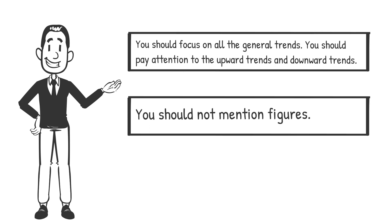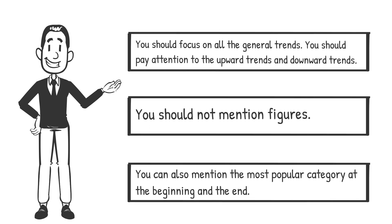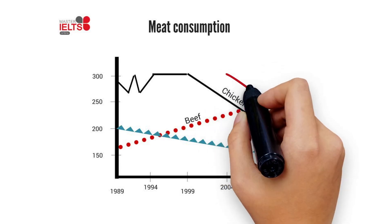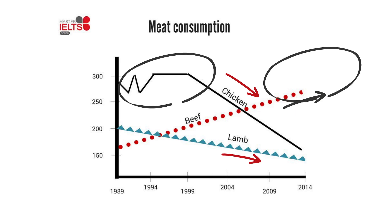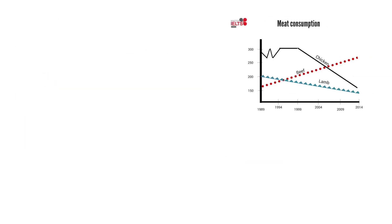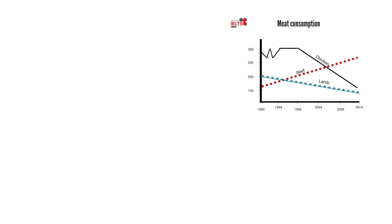You should not mention figures. You can also mention the most popular category at the beginning and the end. Now based on our line graph, we see that chicken and lamb had a downward trend while beef had an upward trend. Also we can see that chicken was the most popular meat in 1989 but in 2014 it was beef. So based on these points, we can write our overview the following way.